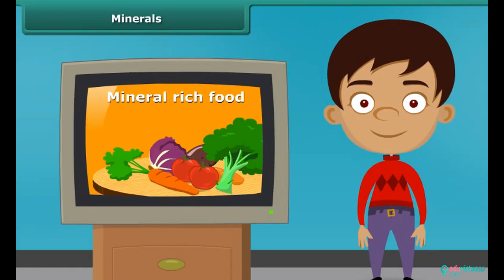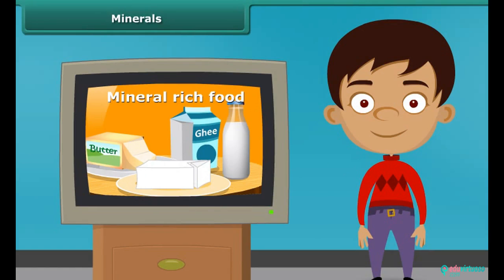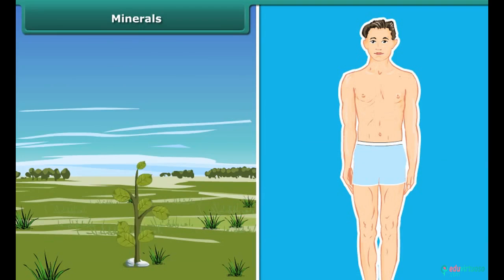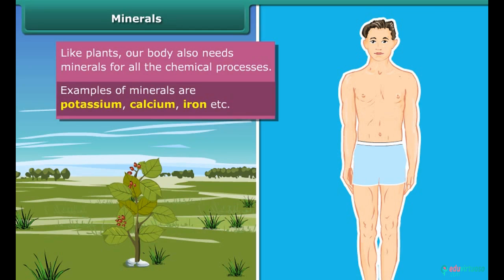You might have seen many advertisements of mineral-rich food items. Now let's know why they are so important. Plants need minerals for growth. A body also requires minerals in small quantities for all chemical processes. Potassium, calcium, iron, etc. are some common examples of these minerals. Let us know more about the sources and the role of these minerals using the next table.